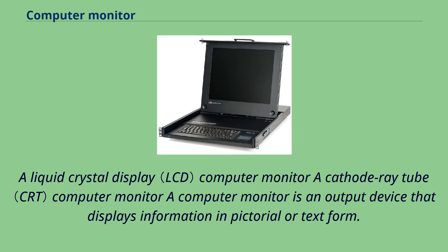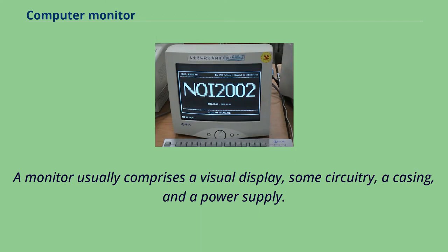A computer monitor is an output device that displays information in pictorial or text form. A monitor usually comprises a visual display, some circuitry, a casing, and a power supply.